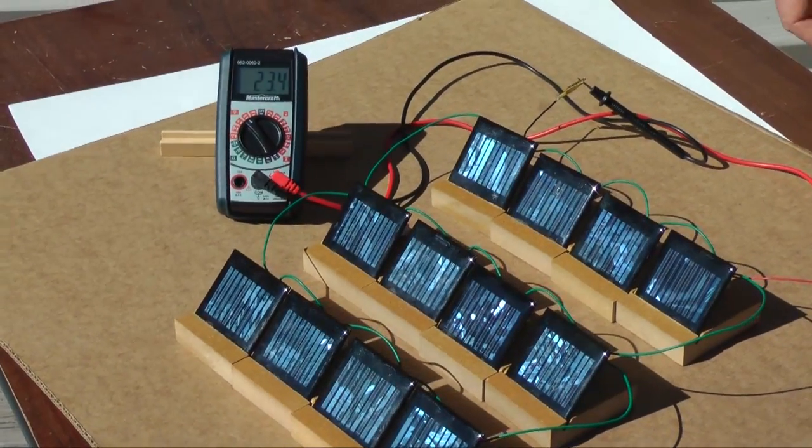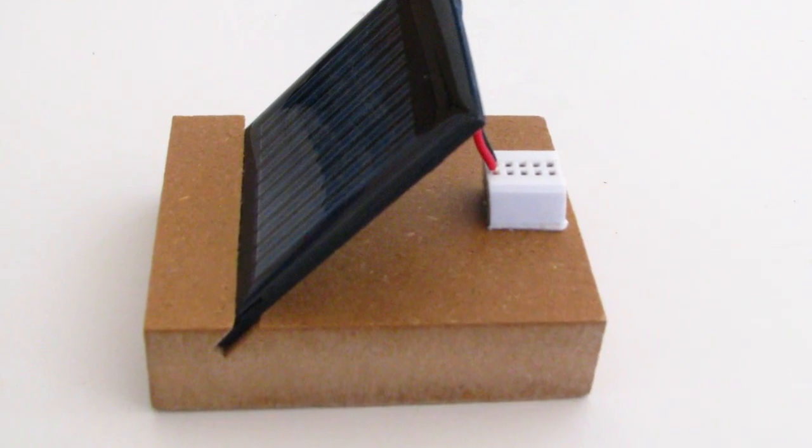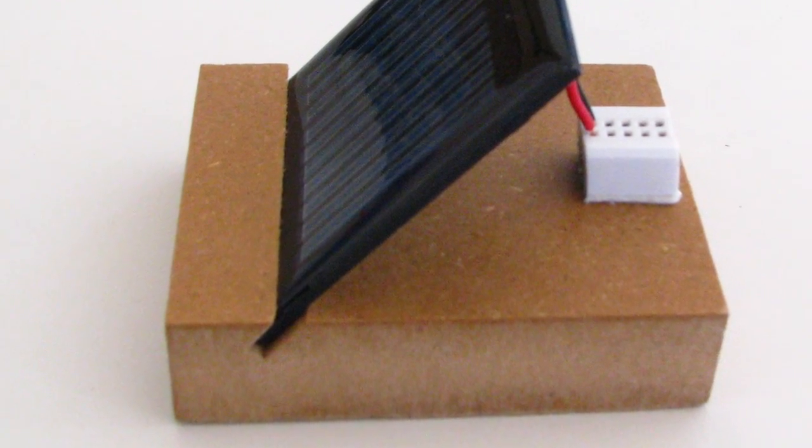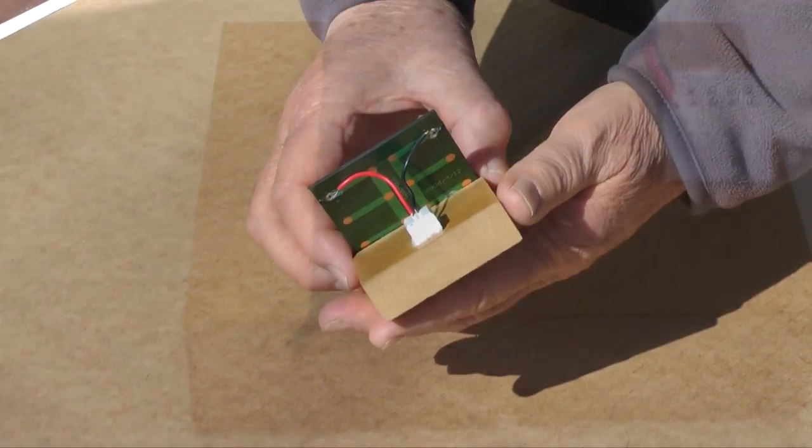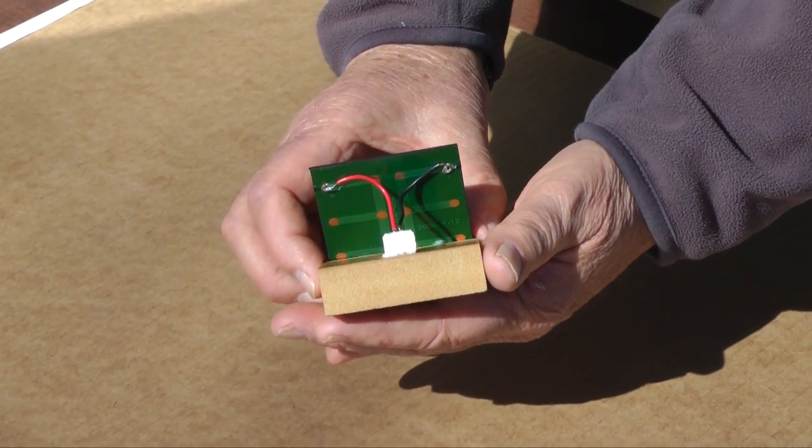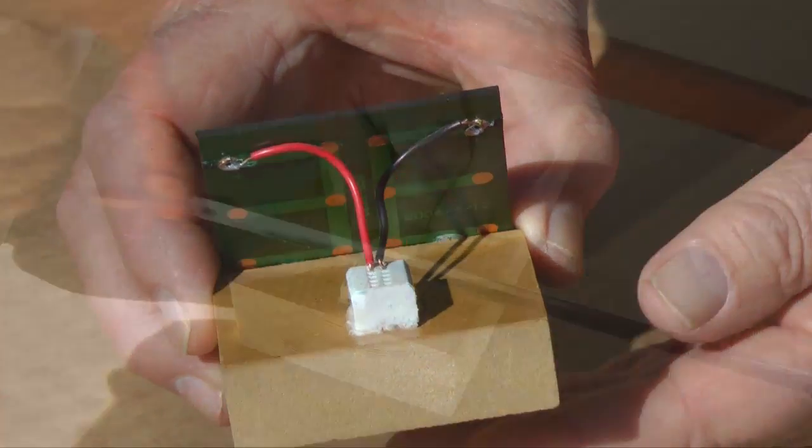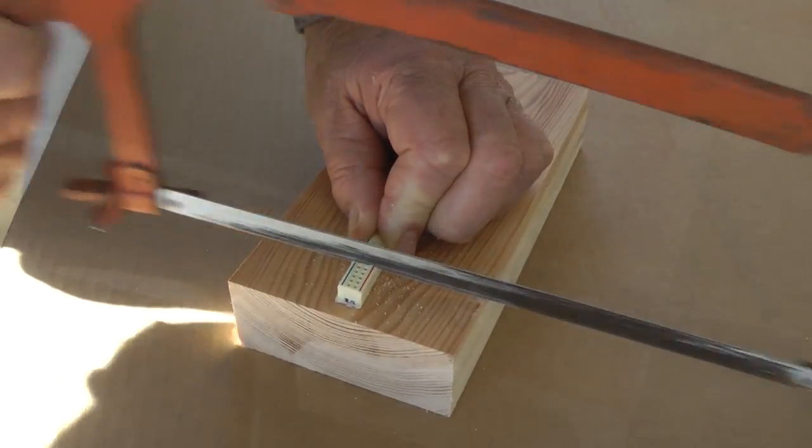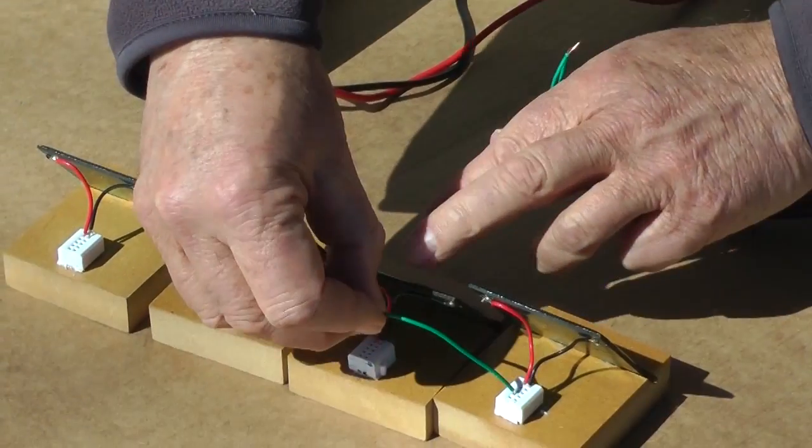The basic construction of each unit is simple. I mounted the modules at 45 degrees by gluing them into an angled kerf cut in a small wood base. The black and red wires connect to the negative and positive terminals of the unit. Black is negative, red positive. I used a hacksaw to create some small breadboard pieces. Glued to the back, they provide a method to connect to the panels.